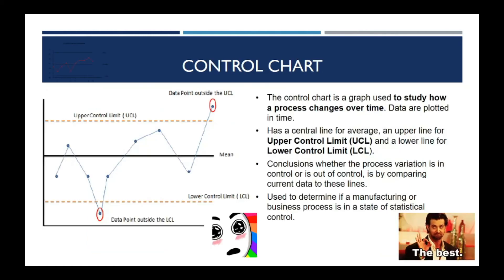Next, we have the Control Chart. Control Chart is a graph used to study how a process changes over time. Data are plotted in time. Control Chart has a central line for average, an upper line for Upper Control Limit (UCL), and a lower line for Lower Control Limit (LCL).